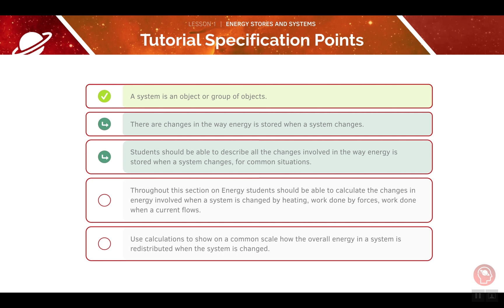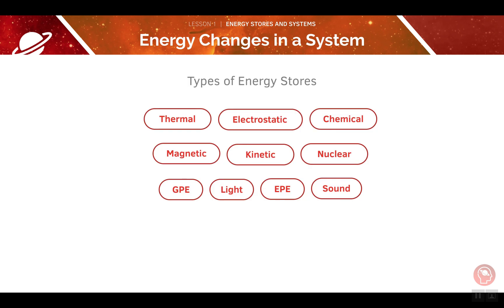We've now completed the first specification point, which means you should understand the definition of a system. Now we'll be moving on to energy changes in different systems. Before we look at the energy changes themselves, we need to look at the types of energy stores that exist. There are 10 types of energy stores that you'll need to know for your exam, and we'll be covering each of these in a little more detail.